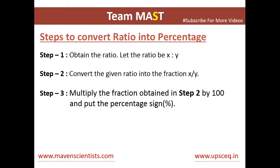In Step 3, we'll multiply the fraction obtained in Step 2 by 100. So if it is x divided by y, we multiply it by 100, which gives us 100x divided by y, and we put the percentage sign in front of it, which gives us the percentage.